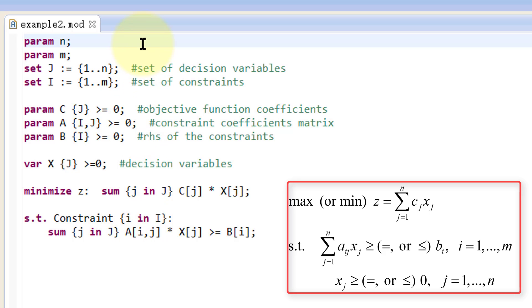Param is a keyword. We define two variables that store values of constant parameters n and m, which are the number of variables and the number of constraints, respectively.